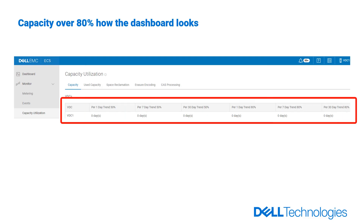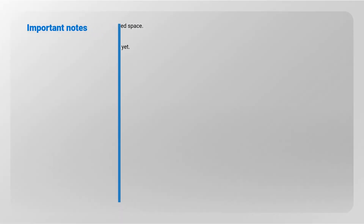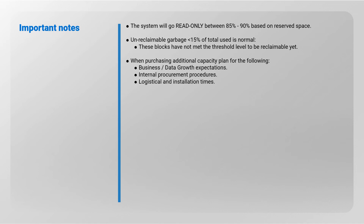This capacity utilization screen shows what the forecasts would look like once you pass 80% full. The system will go read-only between 85 to 90% based on reserved space. Unreclaimable garbage less than 15% of total used is normal, meaning these blocks have not met the threshold level to be reclaimable yet.